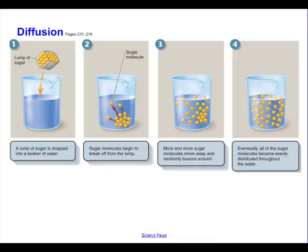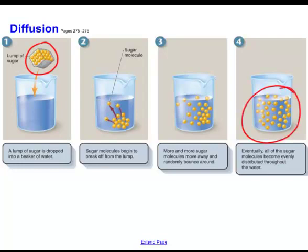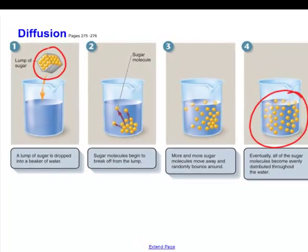The simplest thing to understand is the process of diffusion. If I take a lump of sugar — shown here with these yellow sugar molecules — and place it into a beaker of water, the sugar molecules won't simply stay in one place. They'll begin to break apart from the lump and spread themselves throughout the beaker until they're evenly dispersed. Particles will naturally move from a high concentration to a low concentration until that concentration is evenly distributed everywhere.